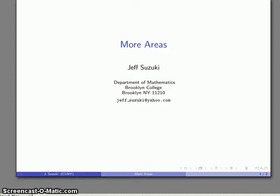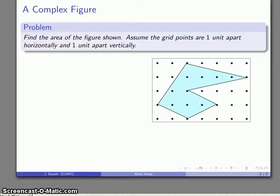We can use the conservation property of areas to find the areas of some very complicated regions. For example, consider this type of figure. There's no good name for it, but we can still find the area provided that we know some measurements.